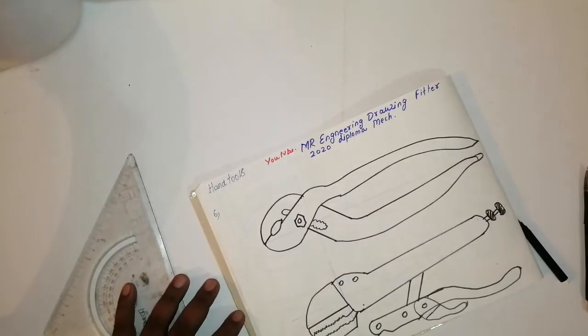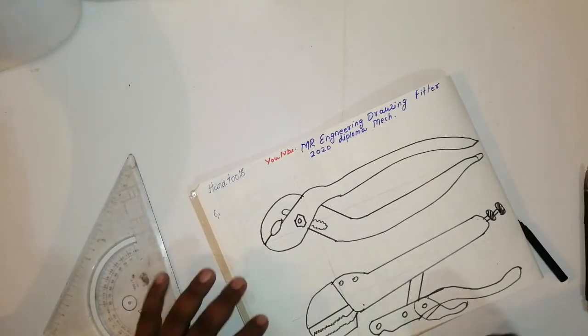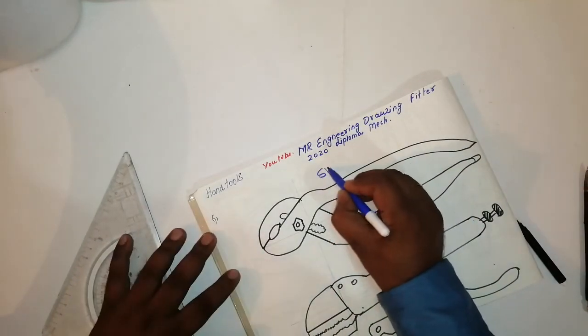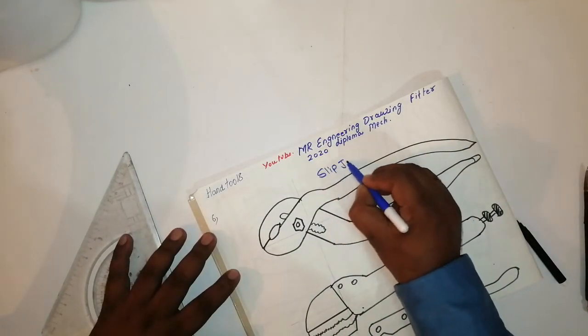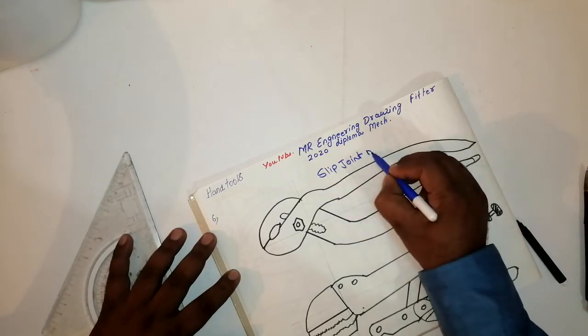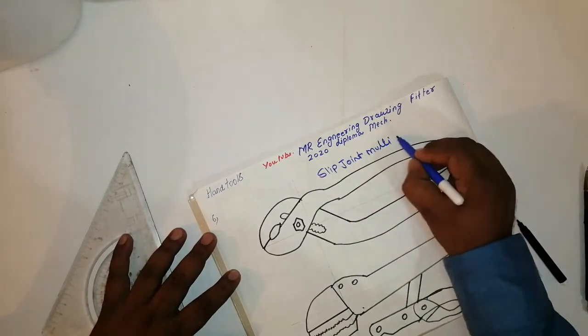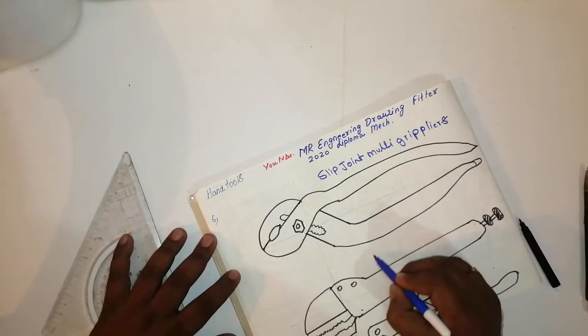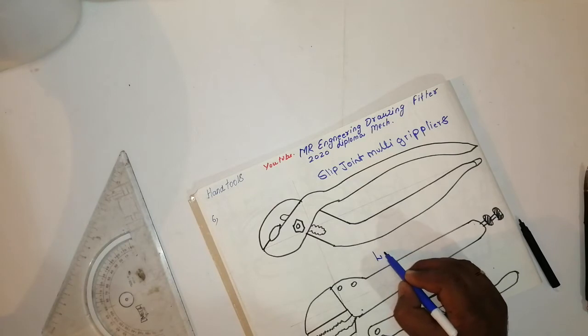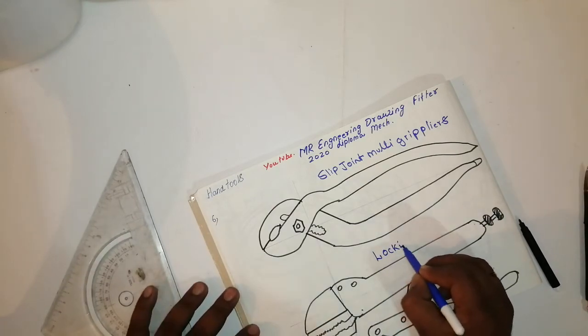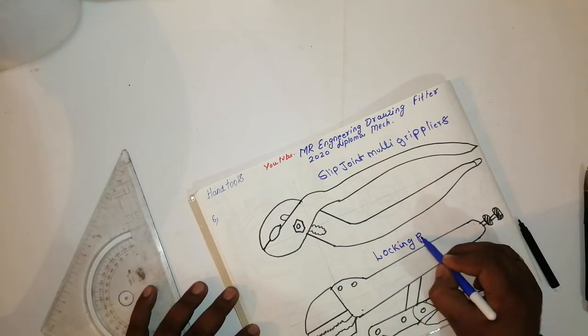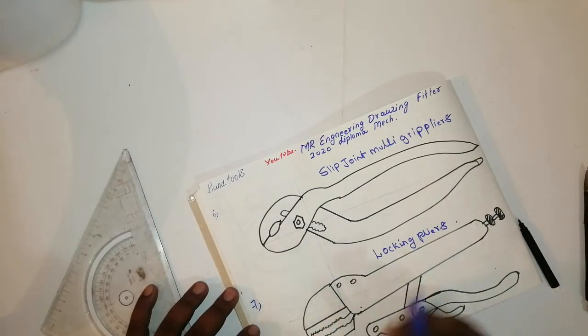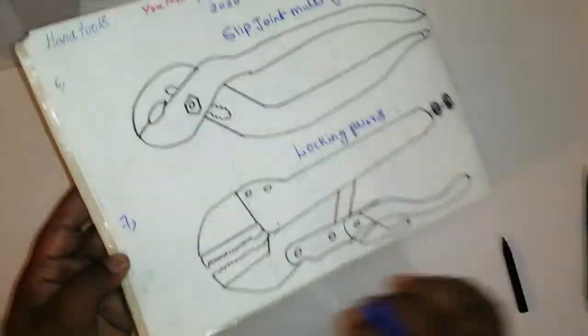This is called the slip joint and multi-grip plier. I've written seven types of plier and this is a locking plier, the seventh type I have written. More drawings you can watch.